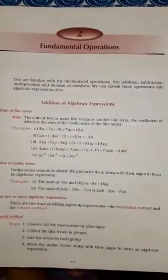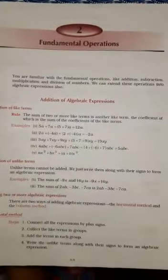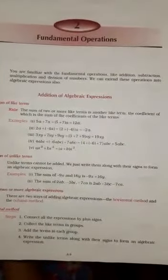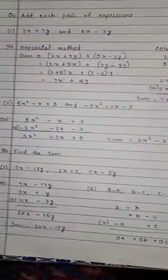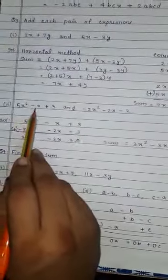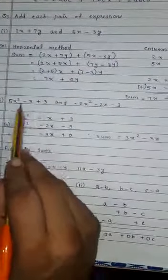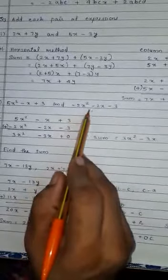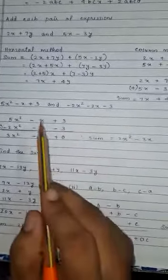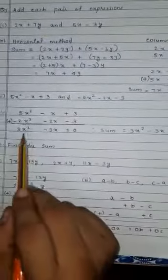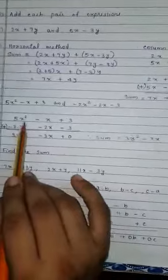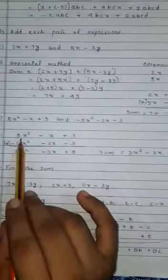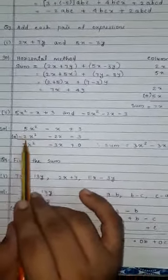Hello children, now we are going to learn the continuation of Algebra Chapter 2 Fundamental Operations. First question: we will show the addition by column method. First, write the expressions one below the other so that the like terms fall in the same column.